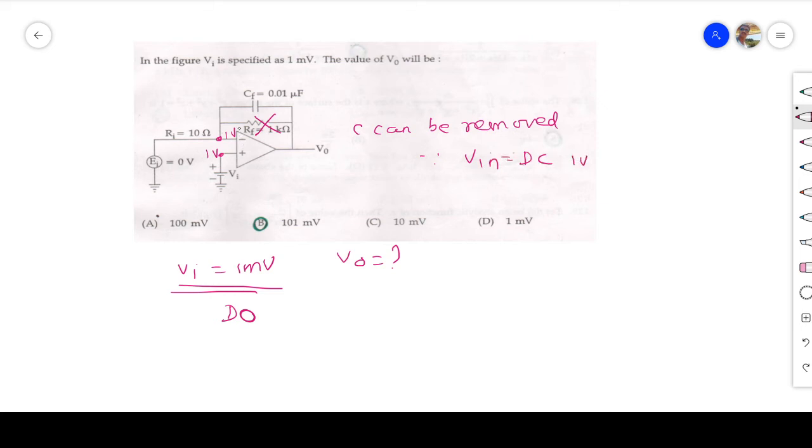Why is C removed? Because input is DC, 1 volt. Now you see the diagram, I removed the capacitor. C can be removed. Now the circuit becomes a non-inverting amplifier like this. It is 10 ohm, it is becoming like this, minus plus. It is going like this.